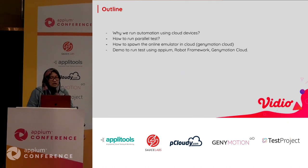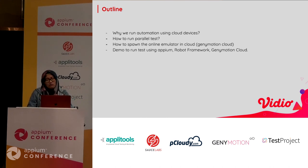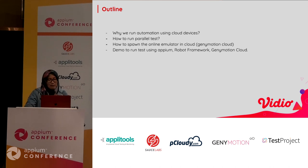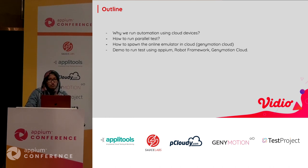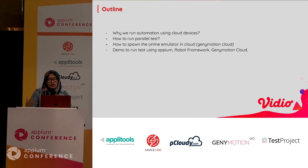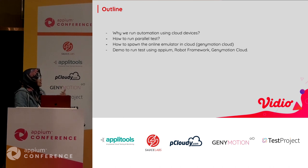The outline is: first, why we run automation using cloud devices. Then, how we do parallel testing to reduce automation test time. I will also explain more about how to spawn and get online emulators in the cloud. Specifically, I will demo using Genimotion Cloud, and then demo running tests using Appium, Robot Framework, and Genimotion Cloud.